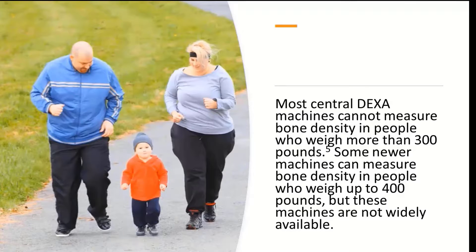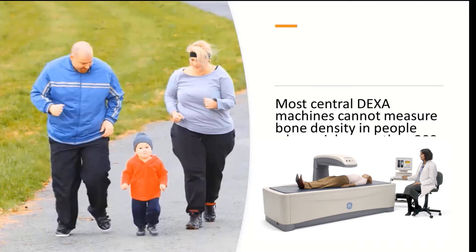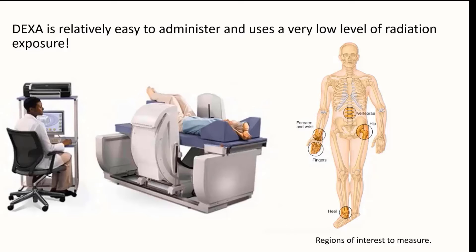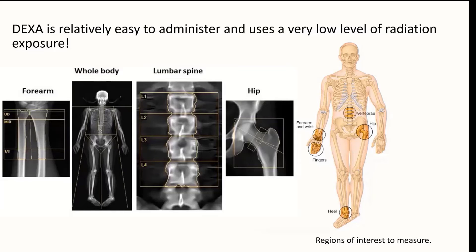Which of the three people in this image would be qualified for a DEXA exam? Surprise — just the child. Both adults are over 300 pounds. Even though some newer machines will accept a patient of 400 pounds, the 300-pound limit is usually the standard upper limit for a DEXA exam. A DEXA scan is relatively easy to administer and uses low levels of radiation. We can do a whole body scan to see both bone densitometry and body composition, or focus on the fingers, forearm, wrist, hip, heel, or vertebra to calculate osteopenia, osteoporosis, and the possibility of fracture.